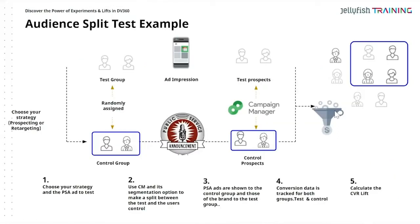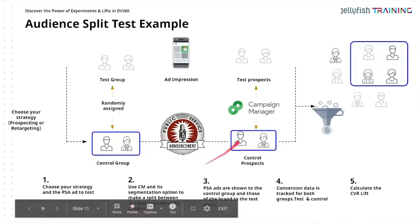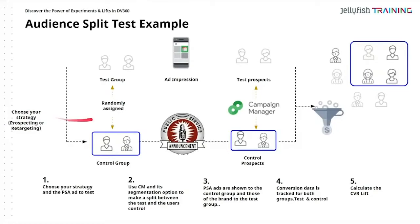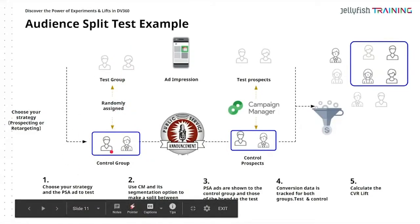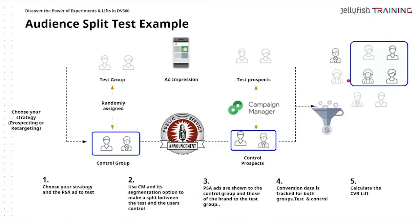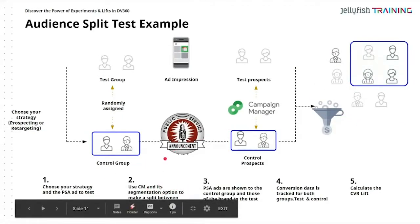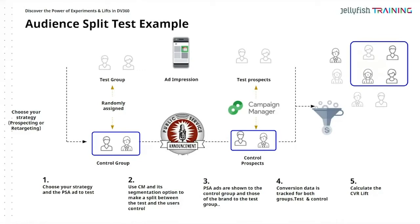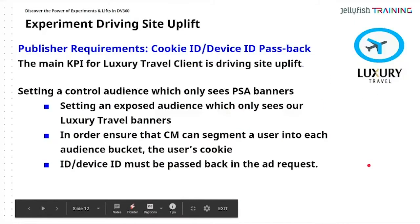This is the journey of how you actually do the audience split test. You choose your strategy — whether prospecting or targeting — you choose your control group, which could be randomly assigned, and then you serve the impression: either the PSA/charity creative or the brand creative. You then compare conversions. You use Campaign Manager for the segmentation and split, and conversion data is tracked for both the test and control groups, then you calculate conversion rate lift.